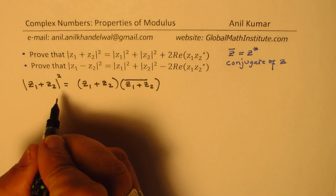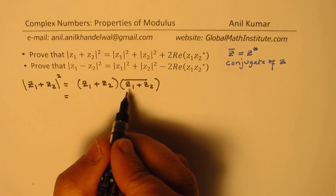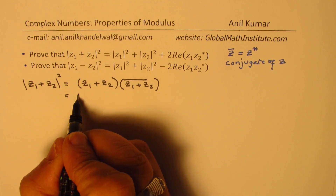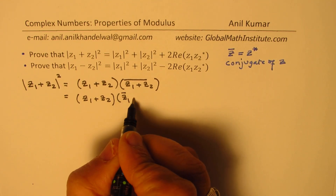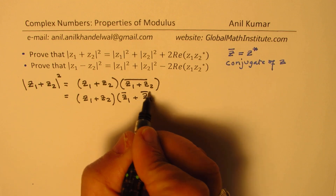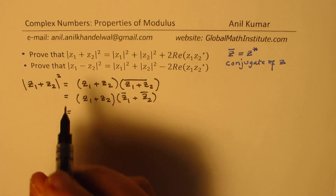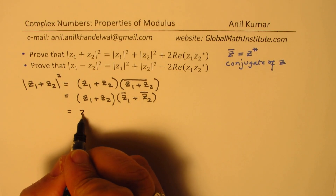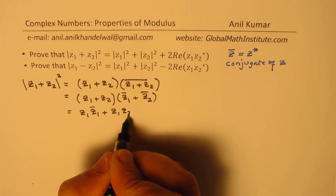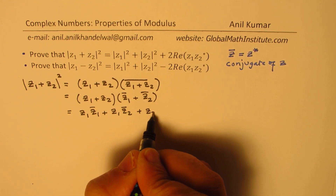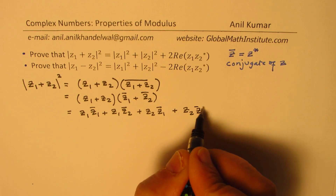Let's use the bar notation as it becomes simpler to explain. You have learned a few properties of the modulus function. The conjugate of z1 plus z2 can be written as the sum of their conjugates, so we write this as z̄1 plus z̄2. Now we'll apply the distributive property, multiplying z1 with both terms and z2 with both terms.